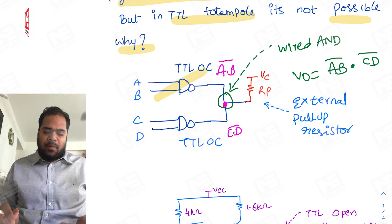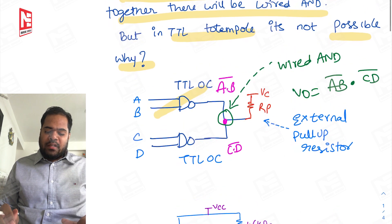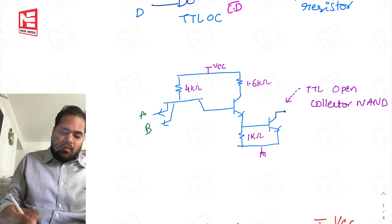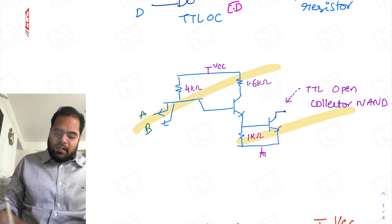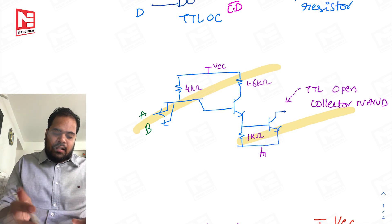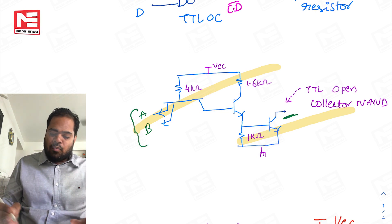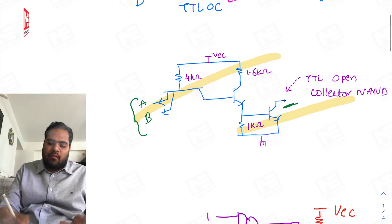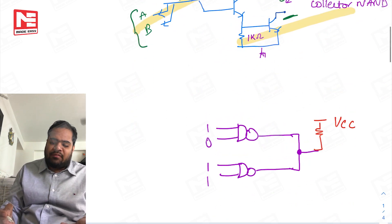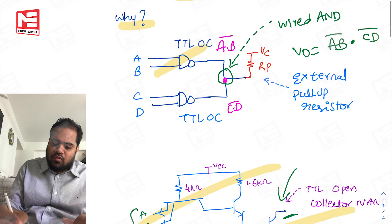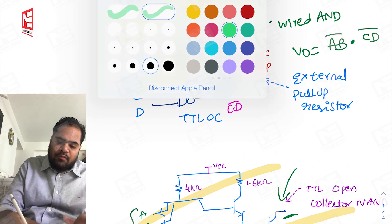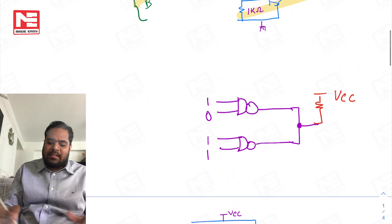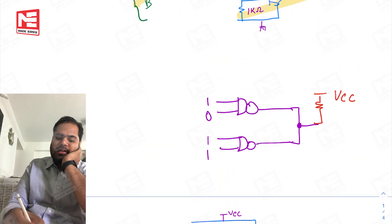Let's see how this is possible. I have taken a TTL open collector circuit — here we give the inputs and here we take the output. This circuit does not work without a power supply, so we normally connect a power supply and an external pull-up resistor here, connected externally.